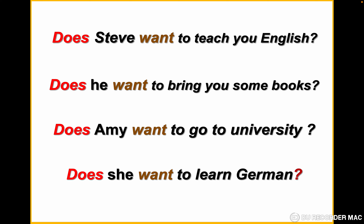Let's see the question form. Does Steve want to teach you English? Does he want to bring you some books? Does Amy want to go to university? Does she want to learn German? We notice that with Steve, he, Amy, and she, the verb doesn't take 's' because it is in the question form. The verb remains in the infinitive.